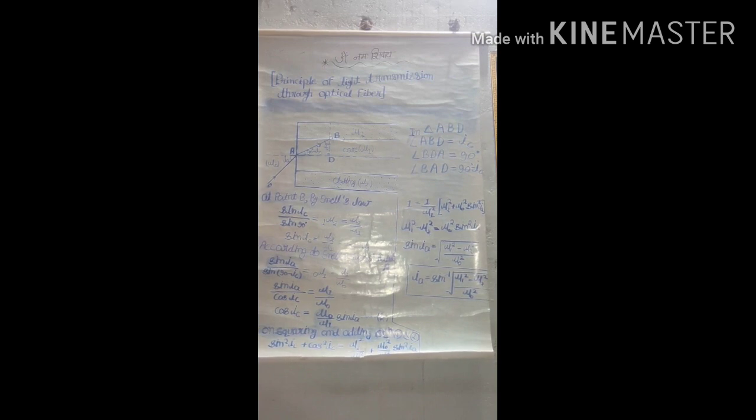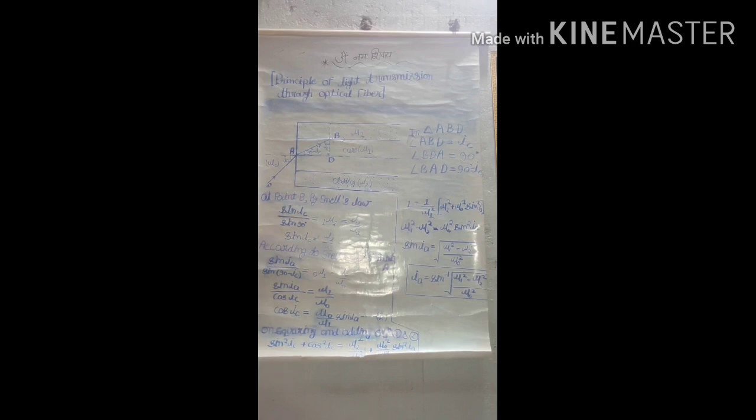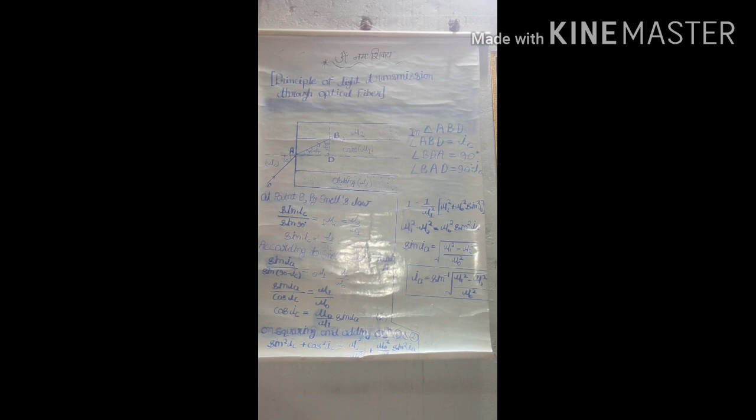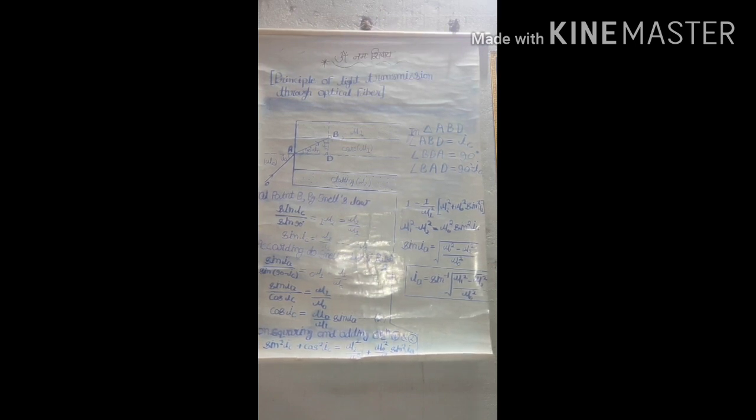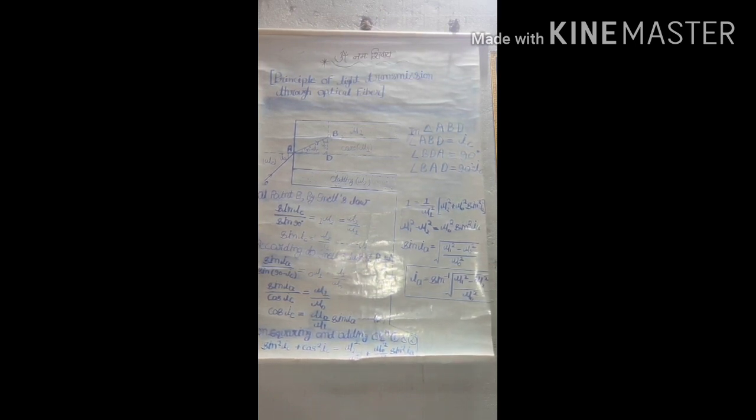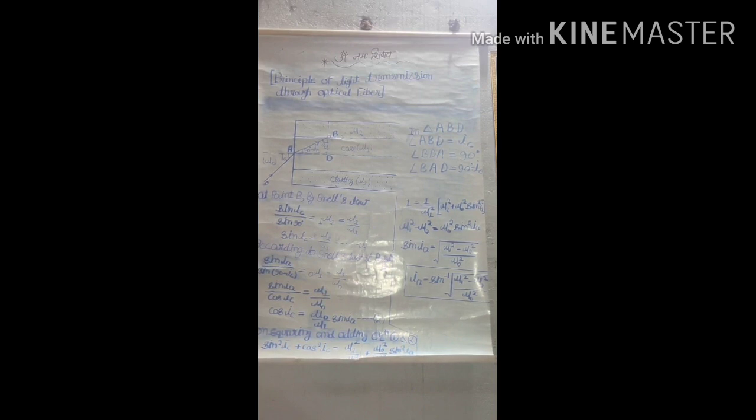Let's say the refractive index of core is mu1 and refractive index of cladding is mu2, and mu0 is the refractive index of that medium in which light ray is incident at an angle IA. For total internal reflection, the incident angle at the surface of core-cladding must be greater than critical angle.